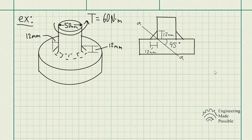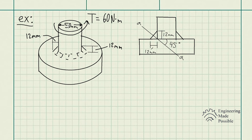Now let's do another example. Two steel shafts are connected using a fillet weld. We need to determine the average shear stress in the weld along section AA if the torque applied is 60 N·m. The fillet weld has a height and width of 12 mm, and the shaft being welded onto the plate has a diameter of 50 mm. Section AA is the critical section where the weld could fail.